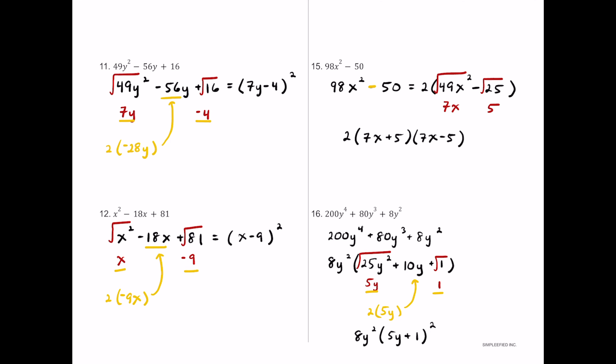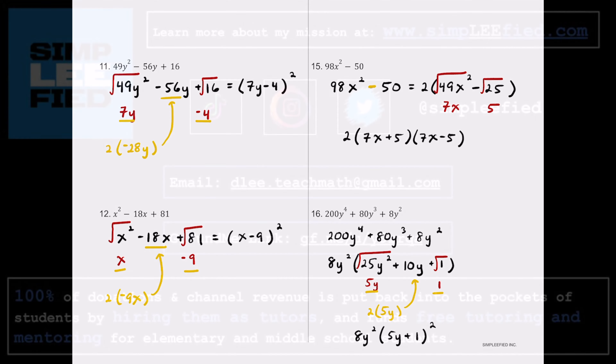So there you have 16 different practice problems on factoring special case polynomials — difference of squares and perfect square trinomials. If you're looking to factor trinomials where the leading coefficient a is 1, or where a is greater than 1, I have two separate videos on those. I really hope you found this video helpful in practicing your factoring of special cases, and as always keep up the great work — I'll see you in the next one.